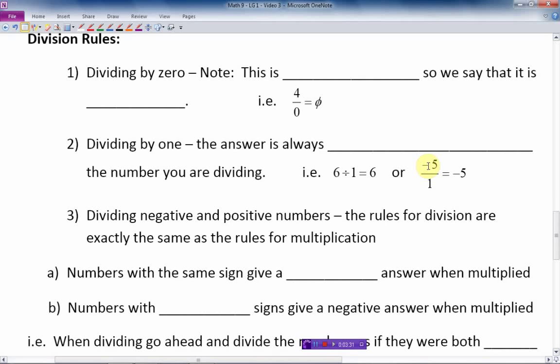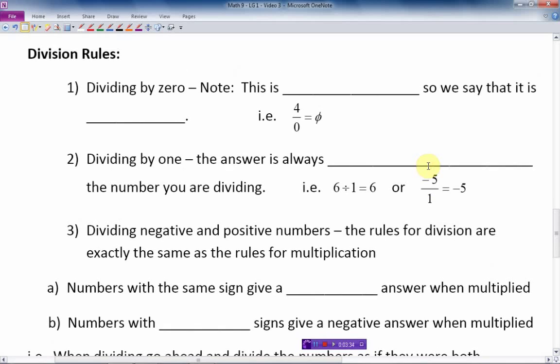Okay, so let's move on here. Dividing rules: divide by 0. This is different than multiplying by 0. If you divide by 0, we see this is undefined. In other words, we can't do this kind of question. It's undefined.